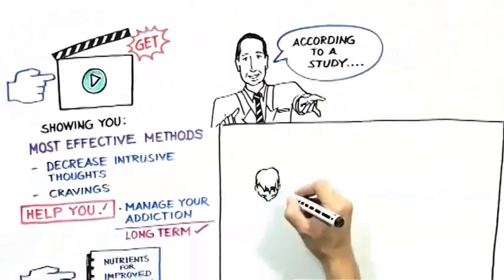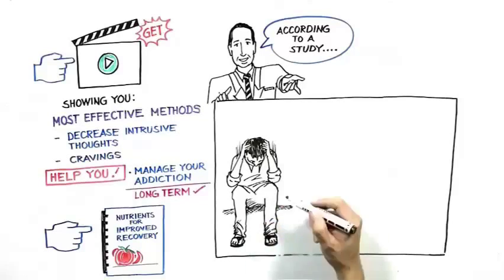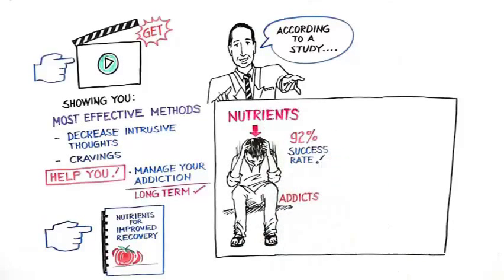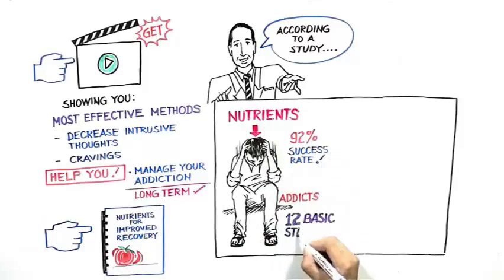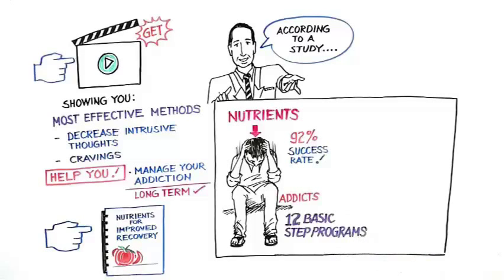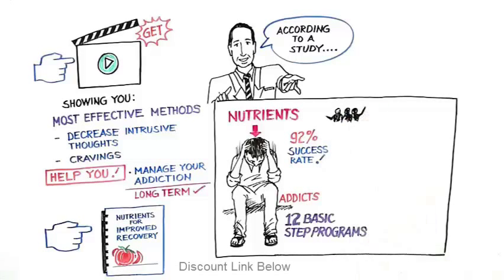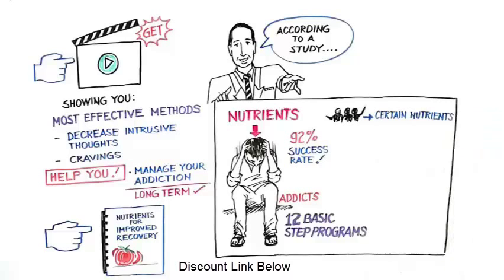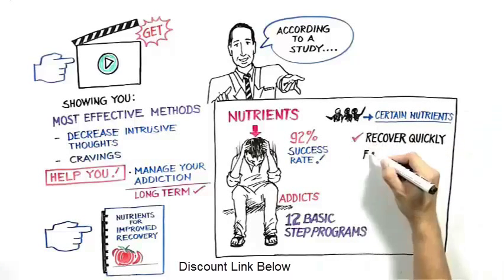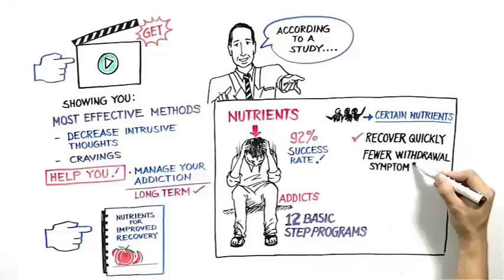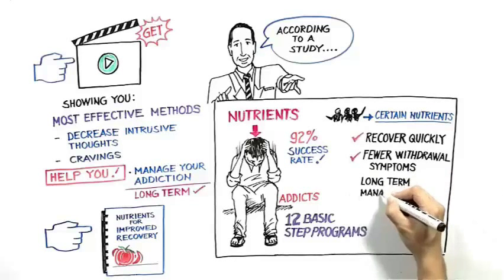According to a study, addicts that were given certain nutrients showed a 92% success rate. That's huge compared to the basic 12-step programs out there. But not only that, people that used certain nutrients in their diet were able to recover more quickly, had fewer withdrawal symptoms, and were able to manage their addictions long term.